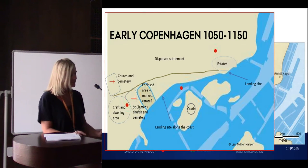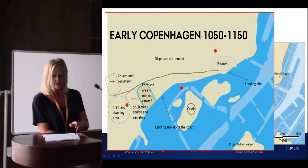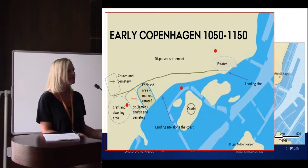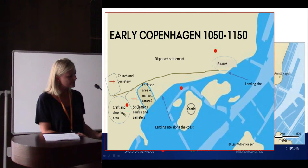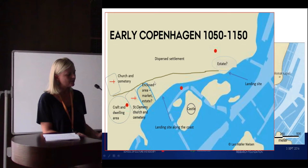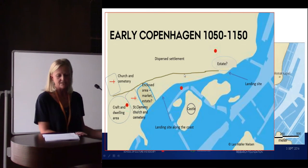We have a ditch and a rampart which enclosed about a five hectare area, perhaps a fortified estate or a marketplace. We have settlement from the town hall square to the area of Gammeltor, and then dispersed settlement all the way to Kongsnytor. But we don't have many large excavations, so the material is quite small for this part.